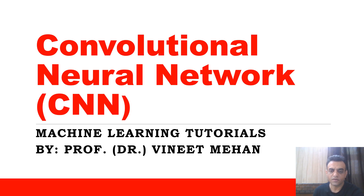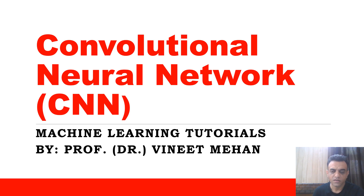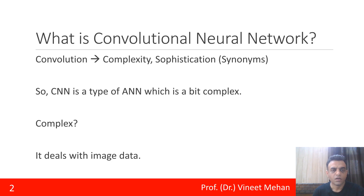Good morning. Today the topic we'll be discussing is related to convolutional neural networks, that is CNN. The word 'convolution' means complexity or sophistication, so CNN is basically a type of artificial neural network that is a bit complex.